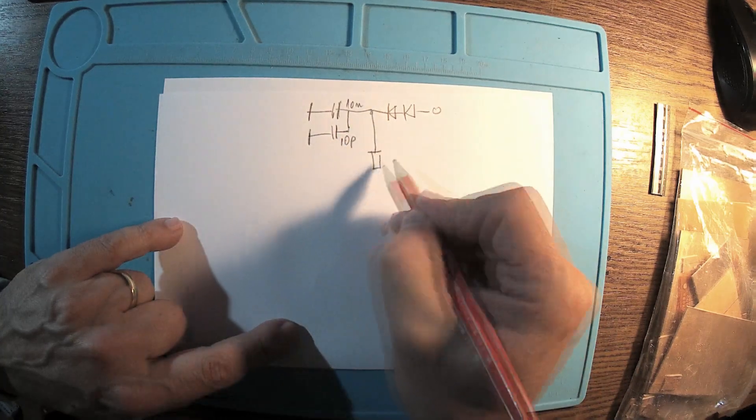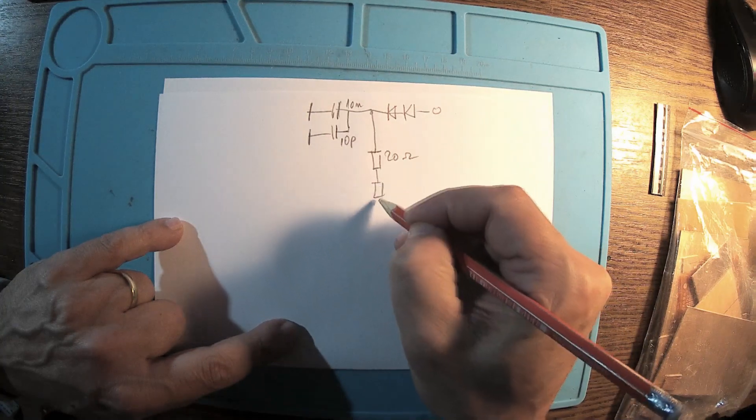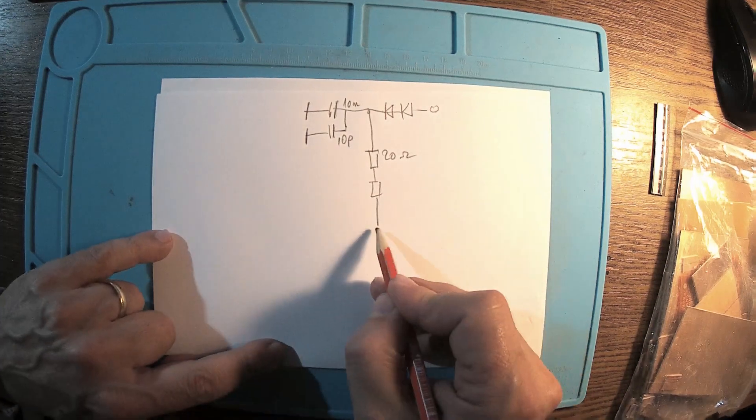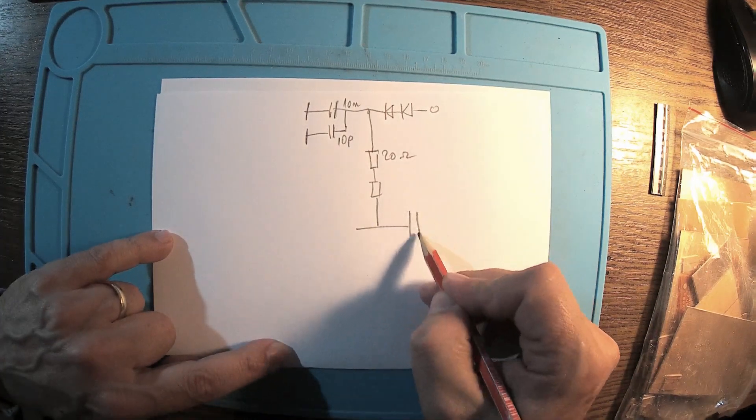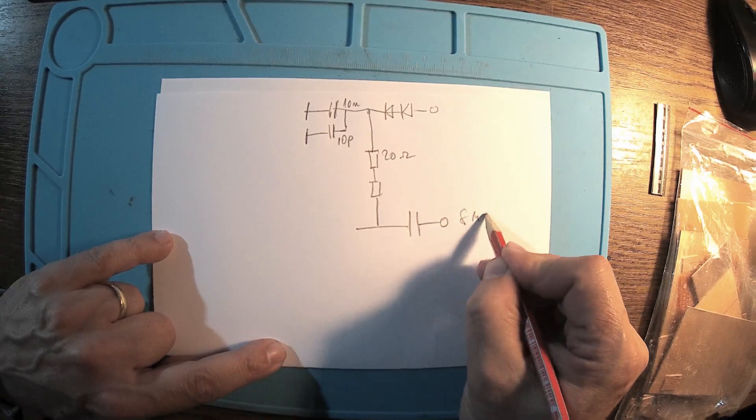Then a resistor, 20 ohms around, a small coil, and this is the plus supply. This is the output here, capacitor and SMA connector.